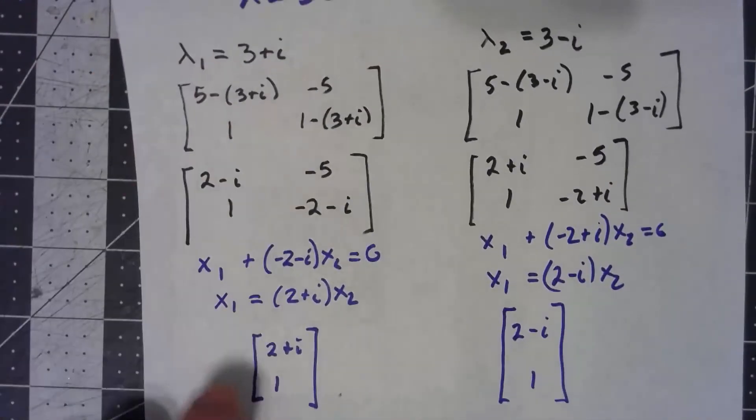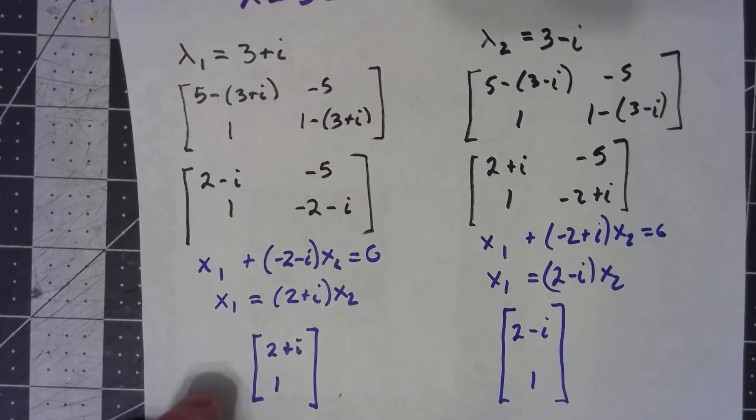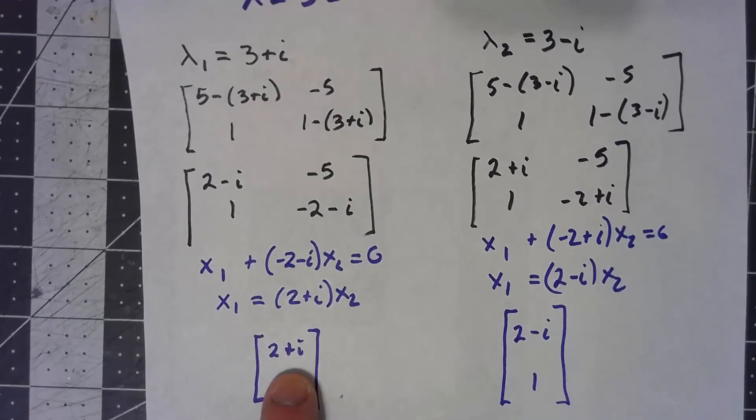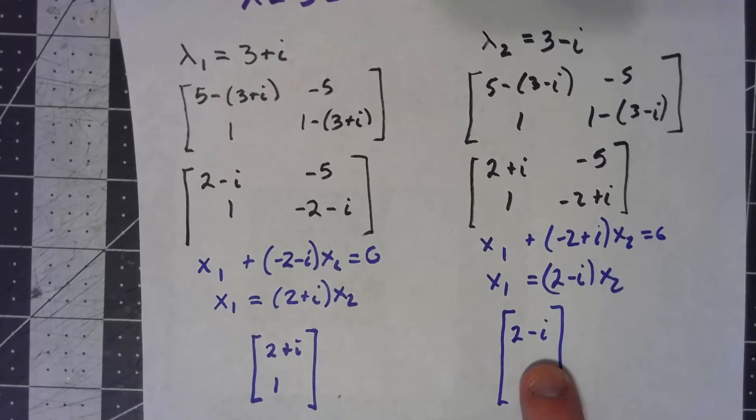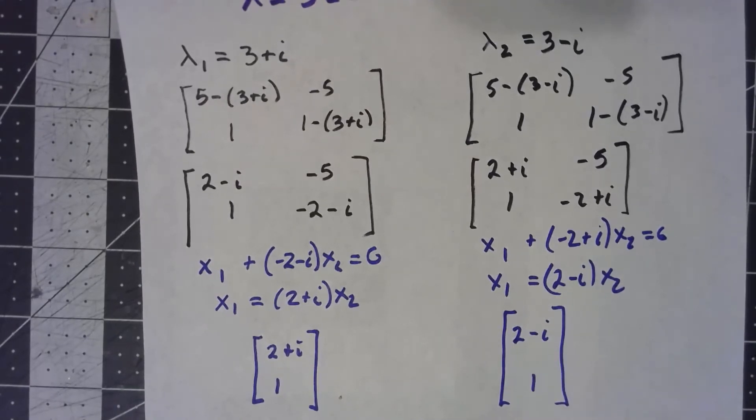The one here, we had 2 plus i, 1. The only thing that we had an i, an imaginary part, was the 2 plus i. And over here, we had a 2 minus i and a 1. This is always going to happen.